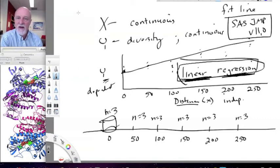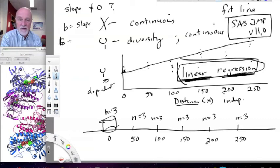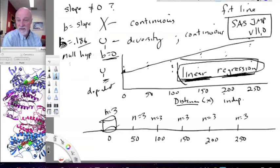And what are you testing here? You're asking whether the slope is different from zero, right? So, a significant linear regression is one where the slope does not equal zero, and that's what you will test, and you will get a value of the slope, and it will be some number, you know, b equals 0.186, and the question is, the null hypothesis is that b equals zero, and you will test for a difference between the observed slope and a slope of zero, and if that difference is statistically significant using SASJump, then you will conclude there is an effect of distance on diversity.